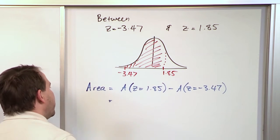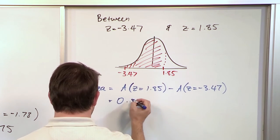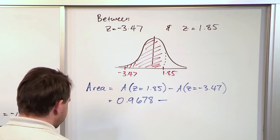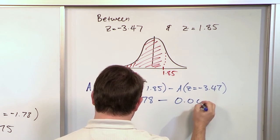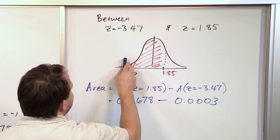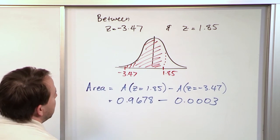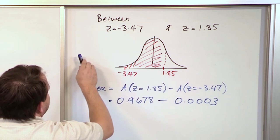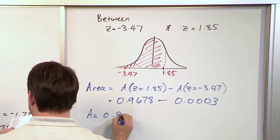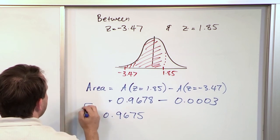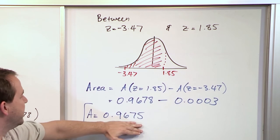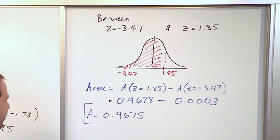We look up z = 1.85 in the table and get 0.9678, then subtract the table value for z = -3.47, which is 0.0003 — it's such a small number because negative 3.47 is so far to the left. When you subtract them, you're left with only what's in the middle. So the area is 0.9675, pretty close to 1, because we have almost the entire distribution shaded.